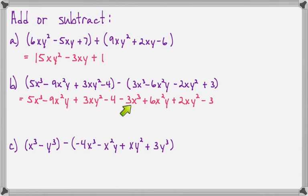I have 5x³ and -3x³, which makes 2x³. I have -9x²y and +6x²y. Together they make -3x²y. Now I have 3xy² and 2xy². Together they make 5xy². Then I have -4 and -3. Together they make -7.